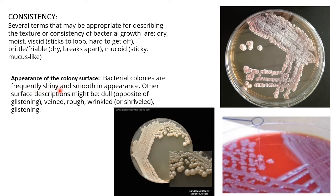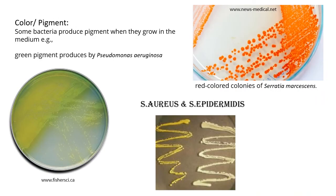The surface appearance of a colony is also noted. Bacterial colonies are frequently shiny and smooth. Other surface descriptions include dull (opposite of glistening, as seen in Candida albicans), rough or wrinkled, and glistening — meaning the colony is very bright and shiny.